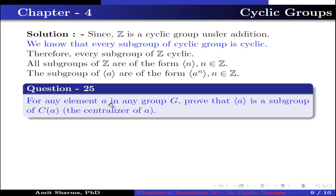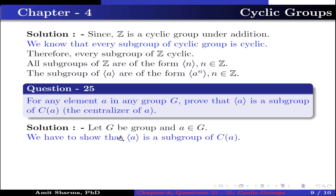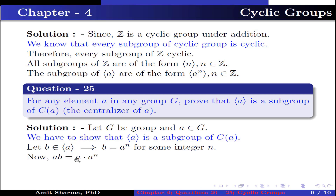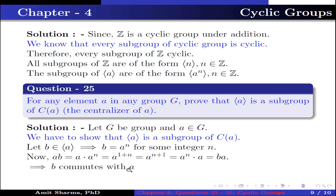Question number 25: for any element A in a group G, prove that the subgroup generated by A is a subgroup of the centralizer of A. Let G be a group and A belongs to G. Let B belong to the subgroup generated by A. This implies B equals A to the power n for some integer n. Now A times B equals A times A to the power n equals A to the power (1+n) equals A to the power (n+1) equals A to the power n times A equals BA. This implies B commutes with A, so B belongs to the centralizer of A.